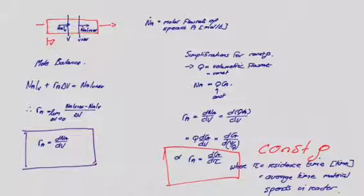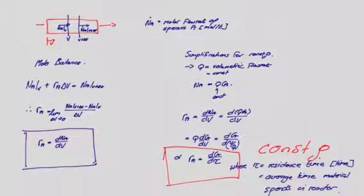The residence time tau is V over Q, and physically it represents the average time that the material will spend in the reactor.